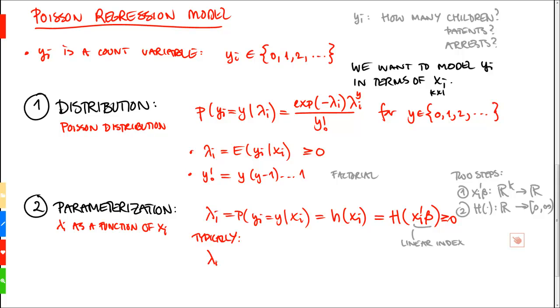lambda i equal to probability yi is equal to y, given xi, to be just the exponential function in terms of xi prime beta, like this. And this has exactly the property we want, that this is 0 or greater than 0. But note that this is not an integer, this is a real number, this is the expected value of yi given xi.